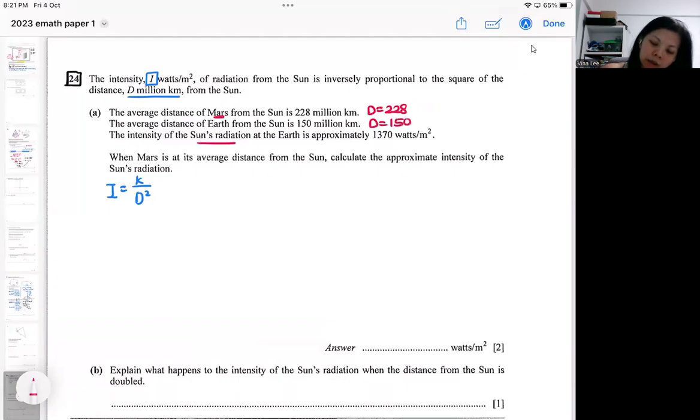This one d is 150. This intensity is for the earth. So this is the intensity from the earth 1370.